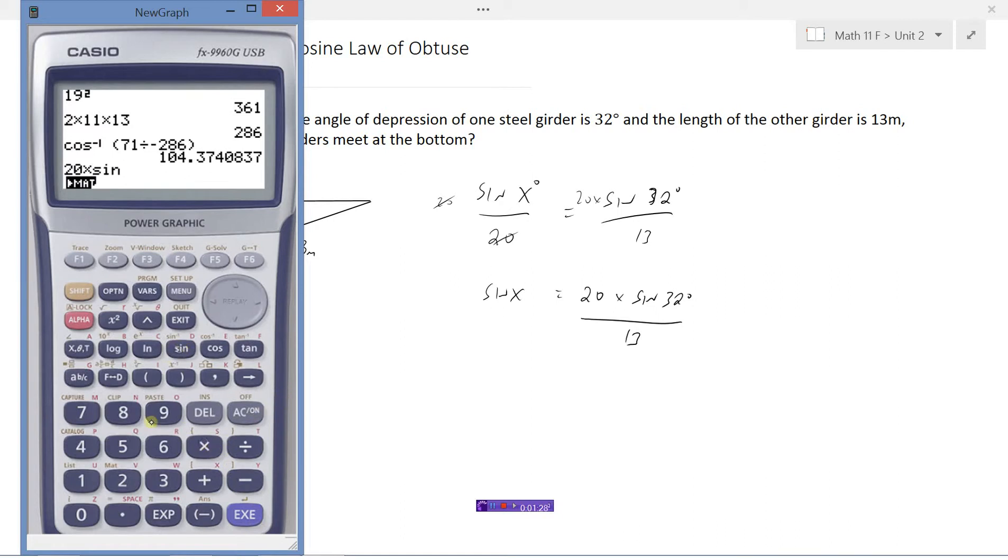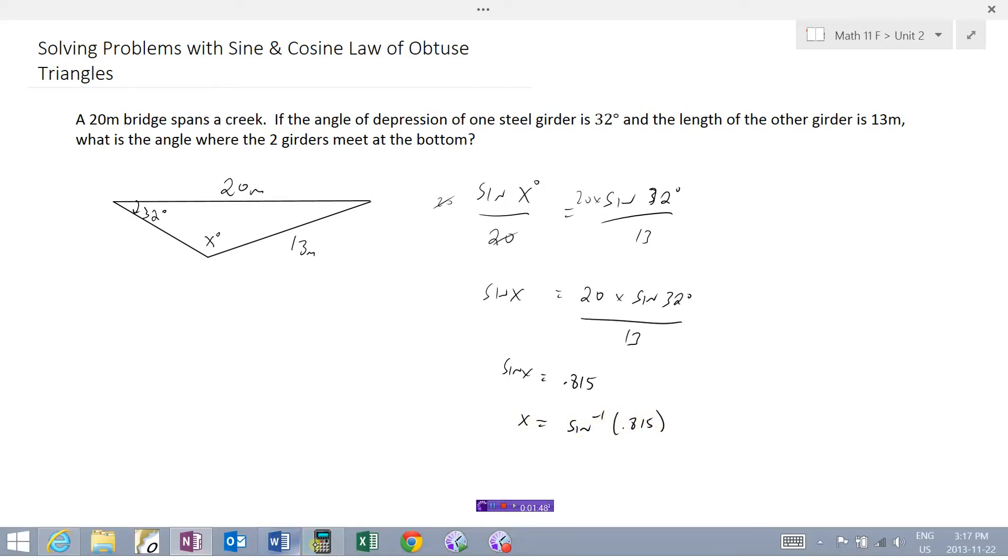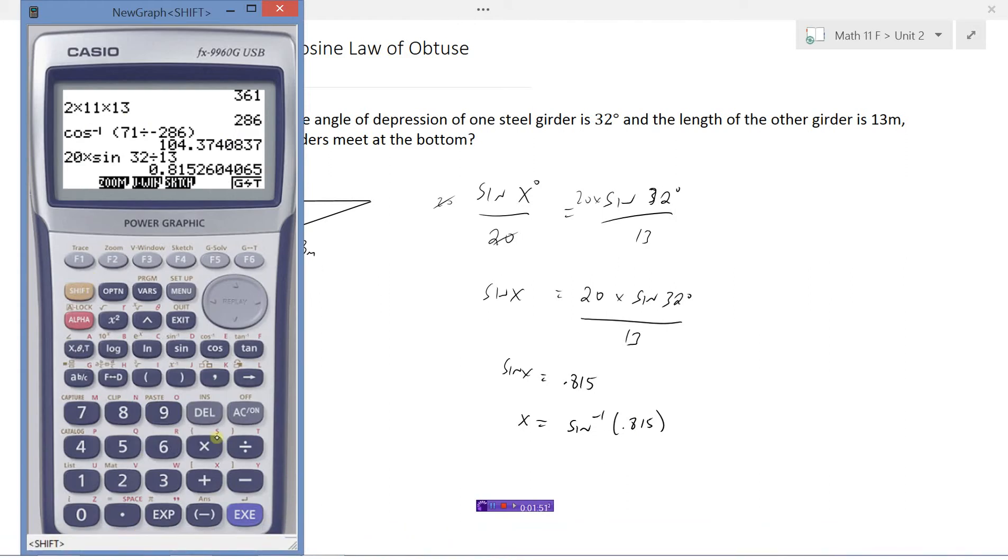So now we'd have sine x equals 20 times the sine of 32 degrees divided by 13, so 20 times sine of 32 divided by 13 is 0.815. And then x now will equal the inverse sine of that answer and we get 54.6.